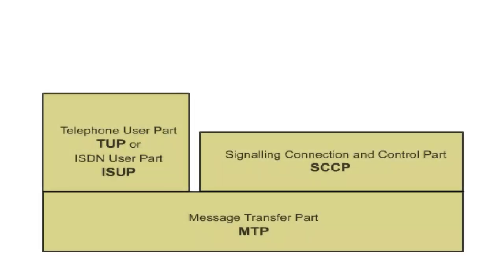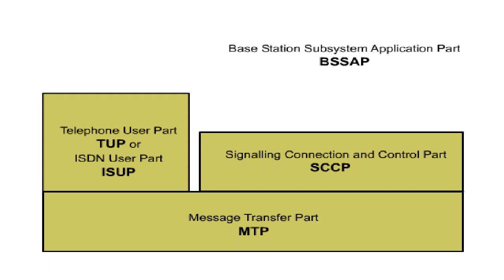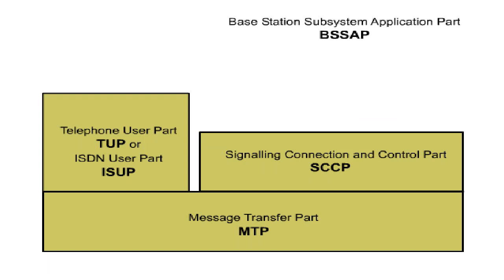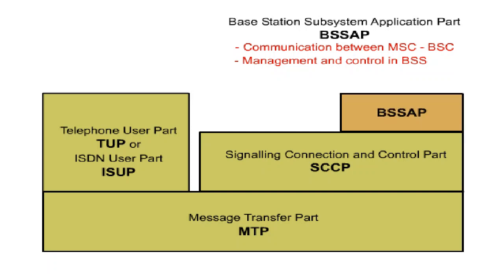The Base Station Subsystem Application Part, BSSAP, is a protocol layer responsible for communication between the MSC and the BSC in GSM. BSSAP is responsible for the entire management and control of the radio resources in the BSS. It resides on top of the Signalling Connection and Control Part, SCCP.